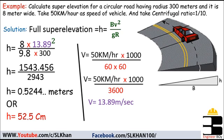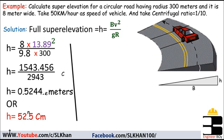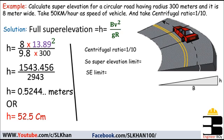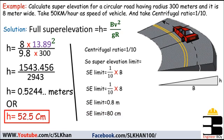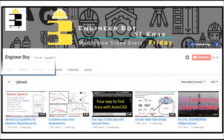We are not done yet because we must check this calculated value against the limit of super elevation. The centrifugal ratio is 1 over 10, so the super elevation limit equals 1/10 times the road breadth: 1/10 times 8 equals 0.8 meters, or 80 centimeters. Our calculated value of 52.5 centimeters is within the limit, so we can provide 52.5 centimeters as the full super elevation on this road.